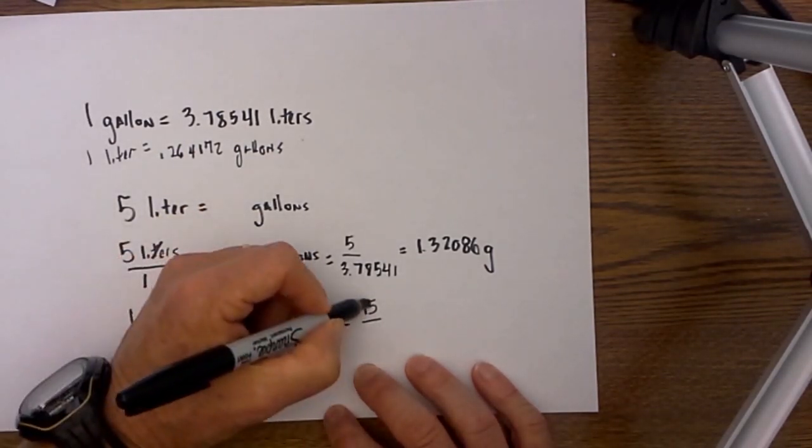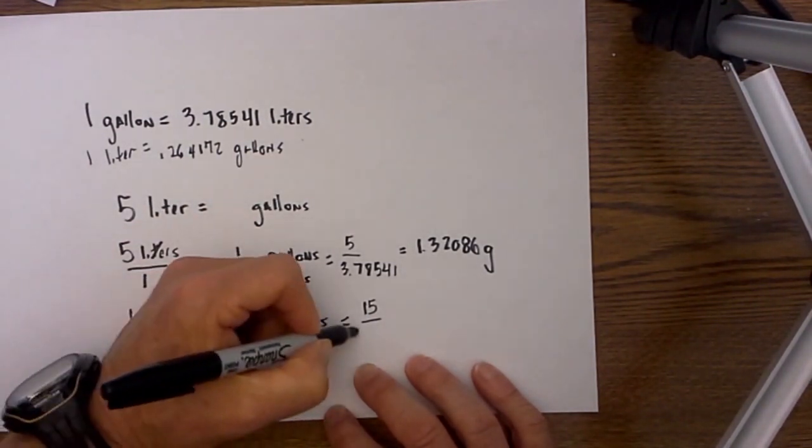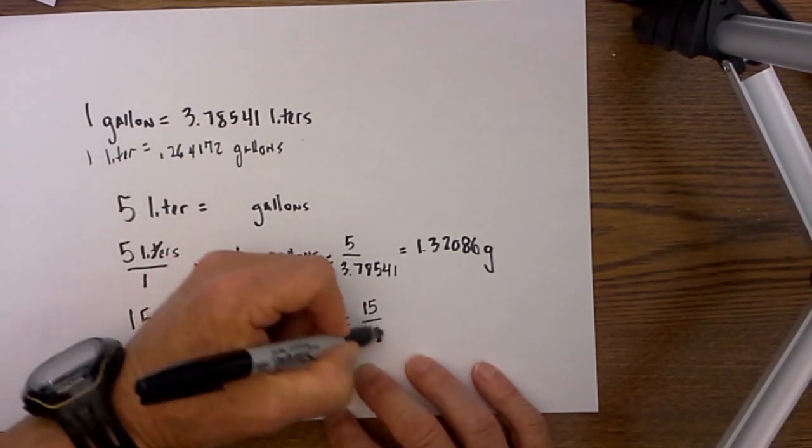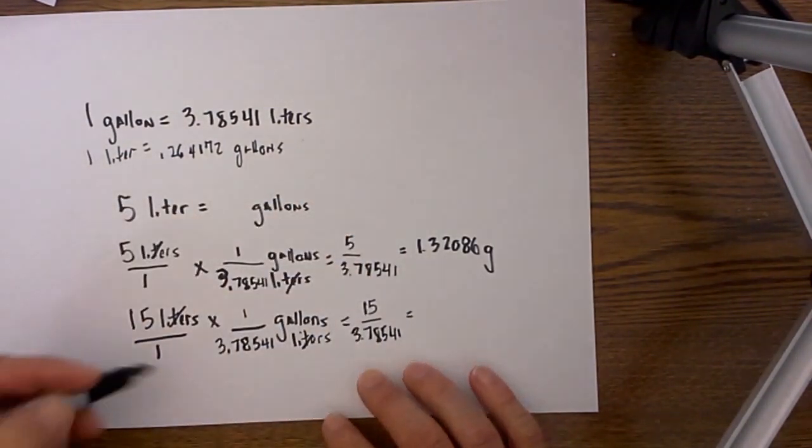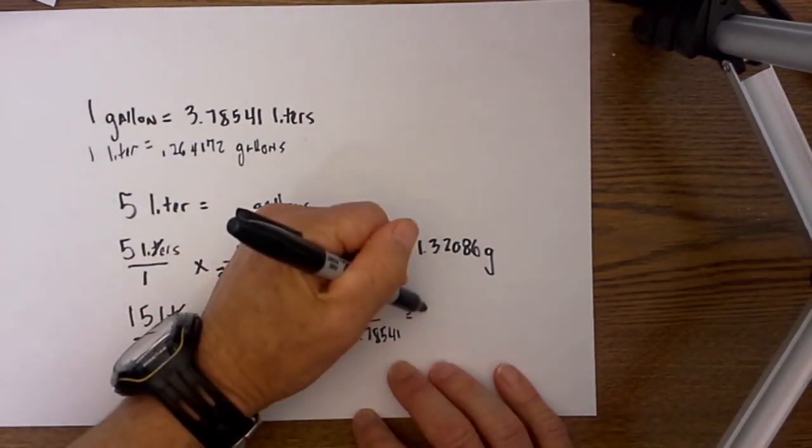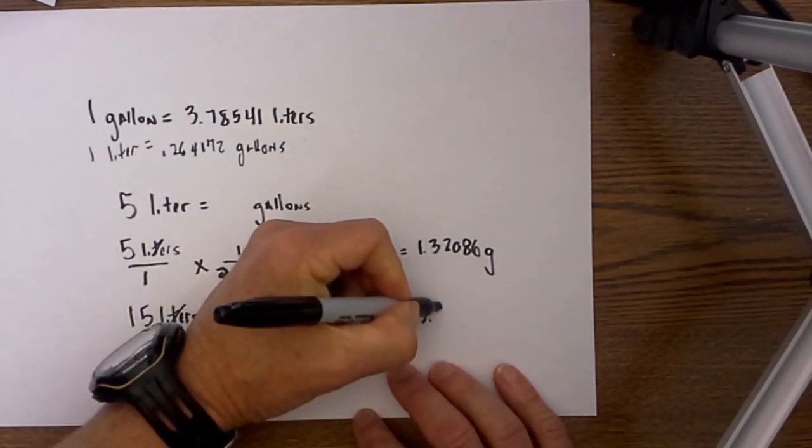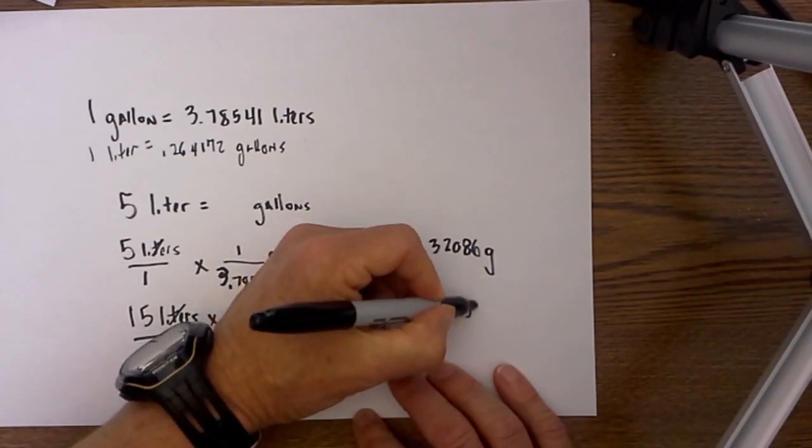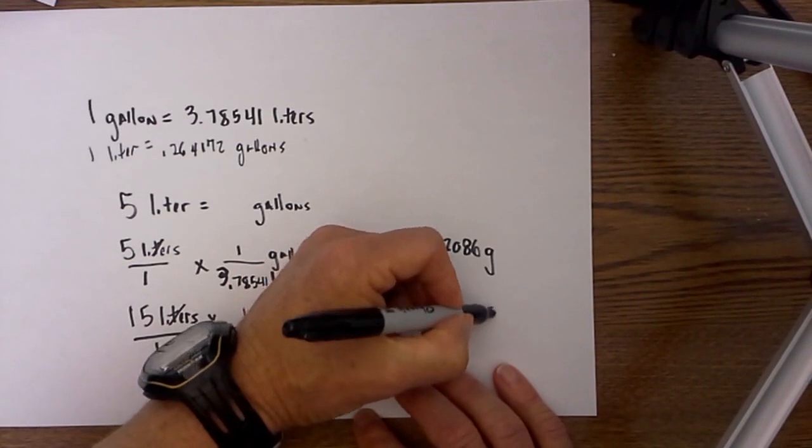So that would be 15 times 1 is 15, 1 times 3.78541, and then it is just a simple division problem. 15 divided by that, and the answer is 3.96258 gallons.